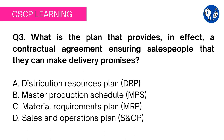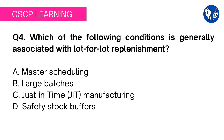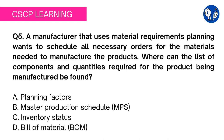Question 4: which of the following conditions is generally associated with lot-for-lot replenishment? Option A: master scheduling. Option B: large batches. Option C: just-in-time manufacturing. Option D: safety stock buffers. We discussed a similar question in question 2. It is quite evident that the answer is just-in-time, so we will move on to the next question without spending much time on question 4.